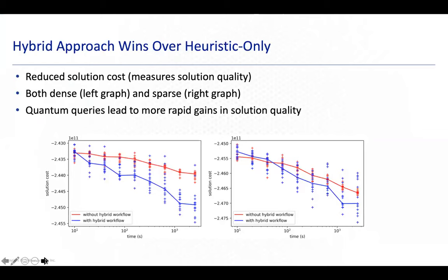Some problems studied with the hybrid approach are shown here: the blue curve shows results with the hybrid workflow, and the red is without it. The left problems are denser, requiring a lot more qubit connectivity in the graph; the right problems are more sparse. In both cases, we showed gains in solution quality. There's a white paper on our website with more detail on these curves.